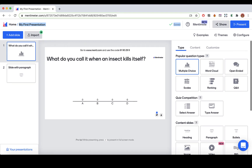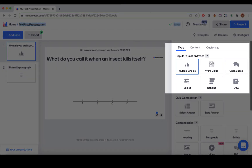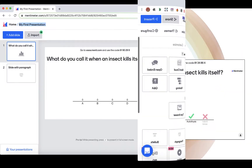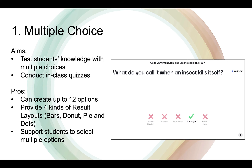Now I will introduce six popular question types. You can easily find them on the homepage. If you want to test your students' knowledge with multiple choice right after teaching in the classroom, select multiple choice and design your questions before class. You can create up to 12 options. It provides four kinds of result layouts and allows students to select multiple options.